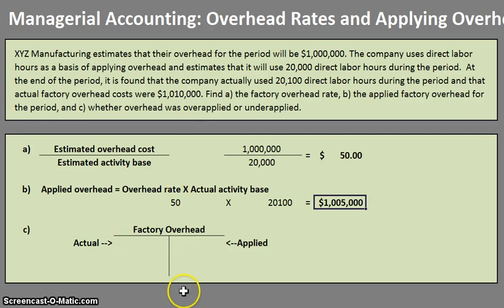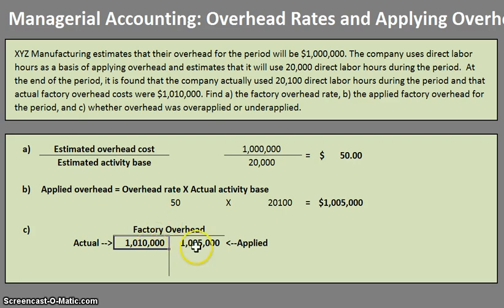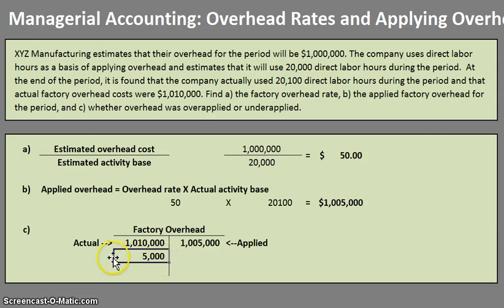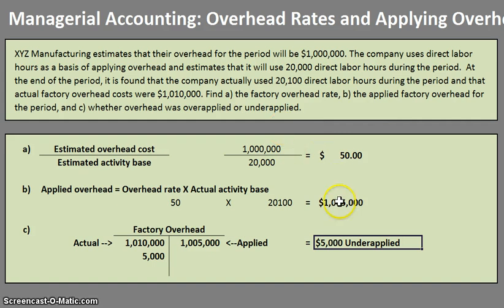To get into more academic accounting, I want to pull up a factory overhead T-account so we can see this. Whenever we have our actual overhead, we debit the factory overhead account. Our applied overhead is always a credit to the factory overhead account. When we find the balance in this T-account, we find that our balance is a $5,000 debit. A helpful mnemonic from back in the day is DUCO: if it's a Debit balance, it's Underapplied; if it's a Credit balance, it's Overapplied. So our answer is that factory overhead is $5,000 underapplied.